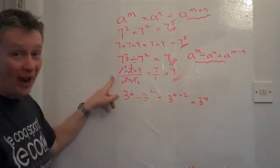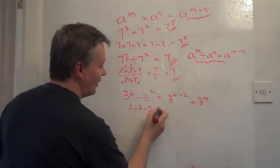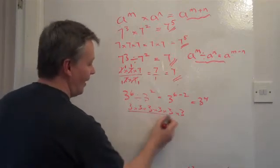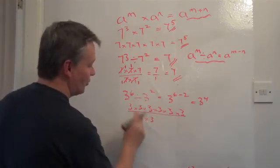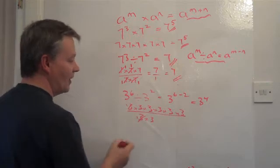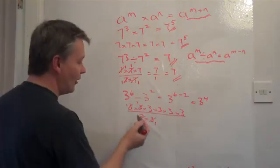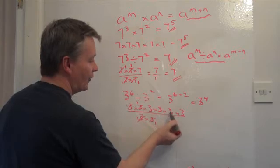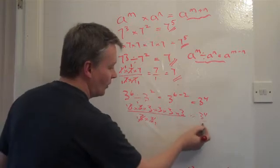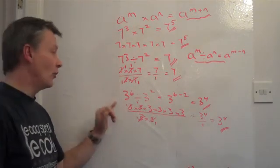Let me prove it longhand. 3 to the power of 6 is 3 times 3 times 3 times 3 times 3 times 3, and at the bottom 3 squared is 3 times 3. Dividing through by 3 twice cancels both 3s on the bottom, leaving 3 times 3 times 3 times 3 on top divided by 1, which is 3 to the power of 4. So the law and longhand give the same answer.